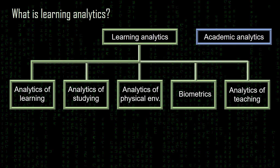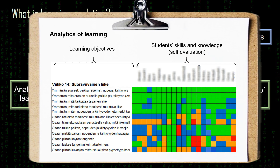Of course there is some overlap between these areas, but I will give a few examples of how I understand them. First, analytics of learning. This picture is from one of my own courses. On the left there are the learning objectives of one week, and on the right-hand side is the self-evaluation of all the students — they evaluate how well they understand or have the knowledge and skills for these learning objectives. As a teacher I can then concentrate on those parts which students find most hard to understand. This is a very simple basic approach to analytics of learning.